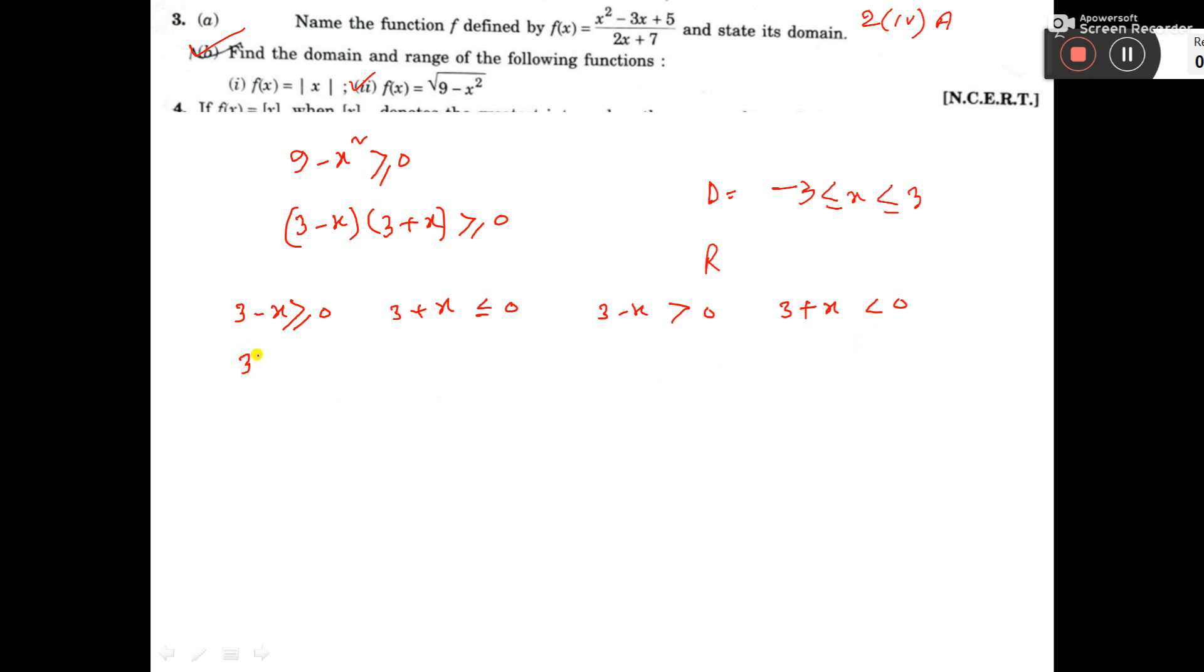Now see, from here we can write 3 greater equal to x. From here, x less equal to minus 3. From here, 3 greater than x. From here, x less than minus 3. Now, seeing these four conditions, we have to get what is the actual answer.